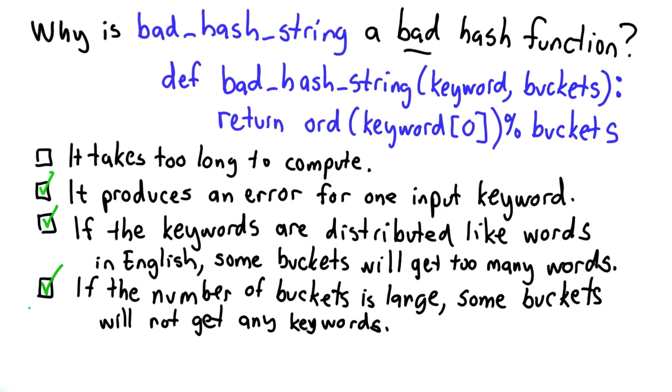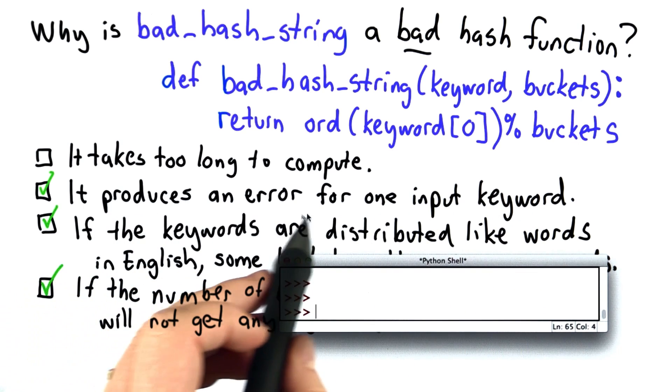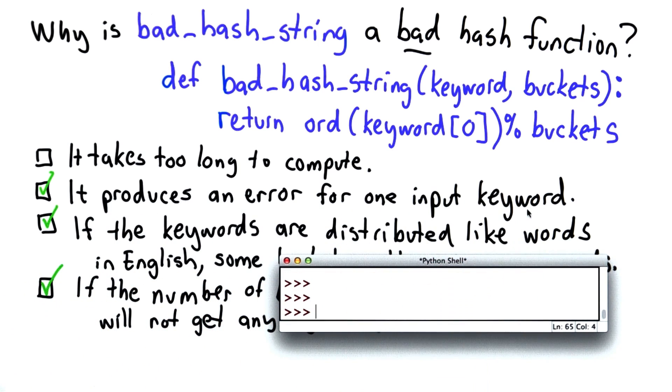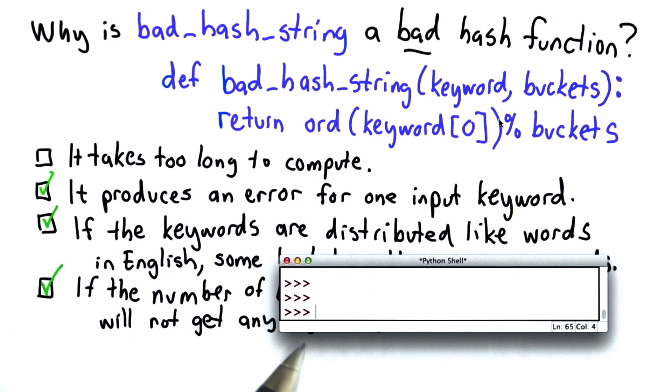But the other three reasons are true, and we'll go through each of these showing what happens looking at how things evaluate in the Python interpreter. So the first correct reason is that it produces an error for one input keyword. When we write code, we should think about whether it works for all possible inputs.